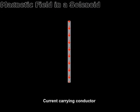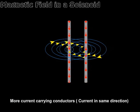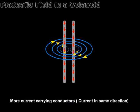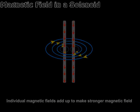We know that a current carrying conductor has a magnetic field around it. When more than one current carrying conductor are placed together, the cumulative magnetic field is the sum of the magnetic field generated by each conductor.